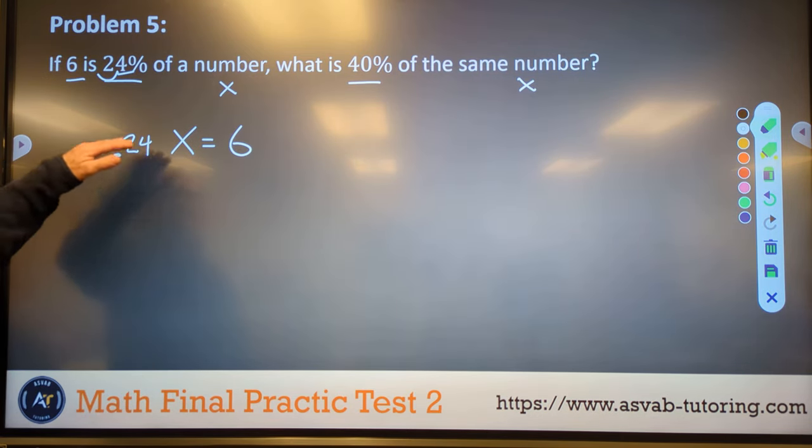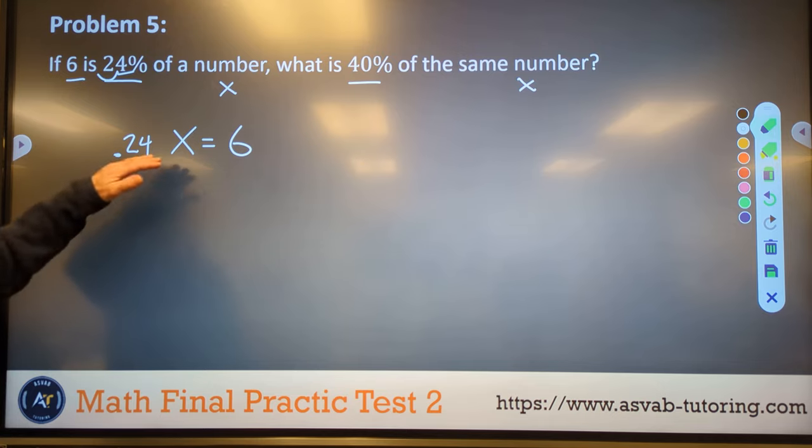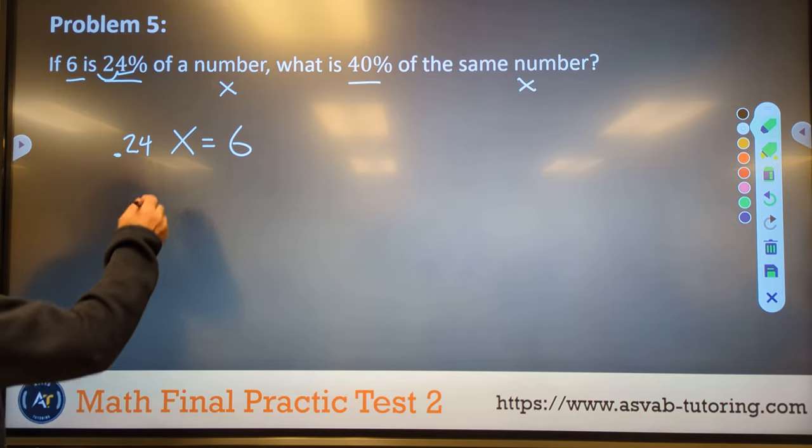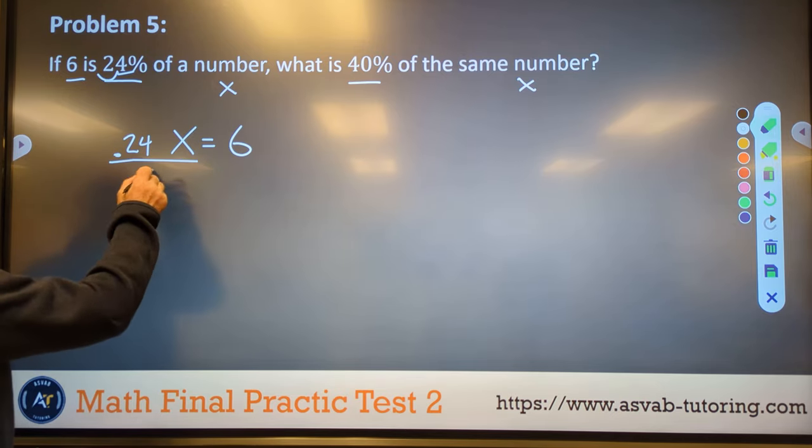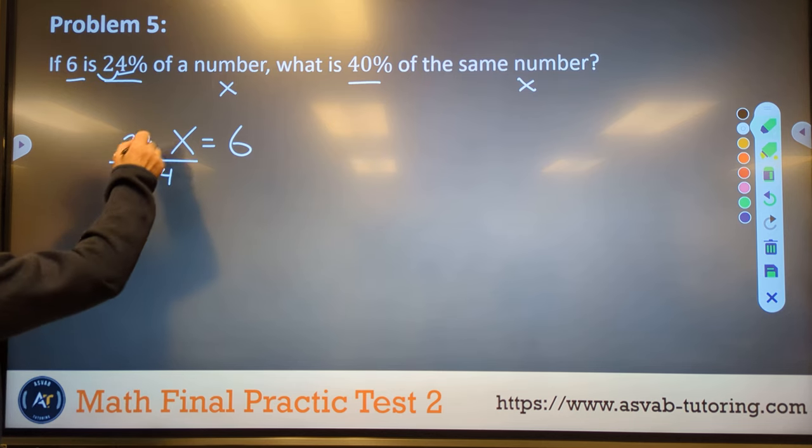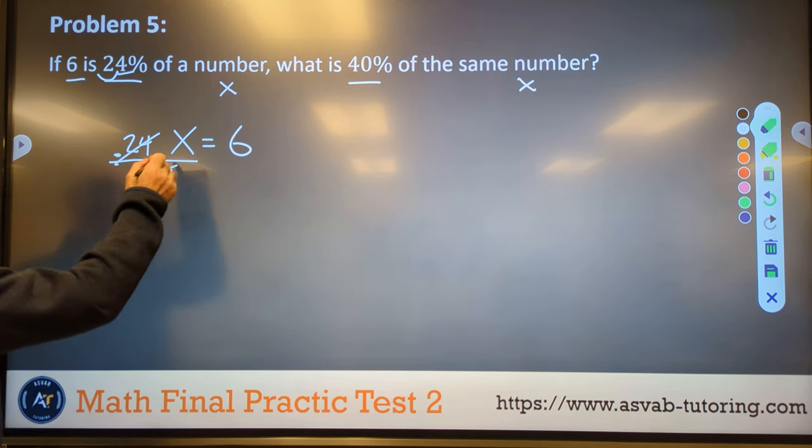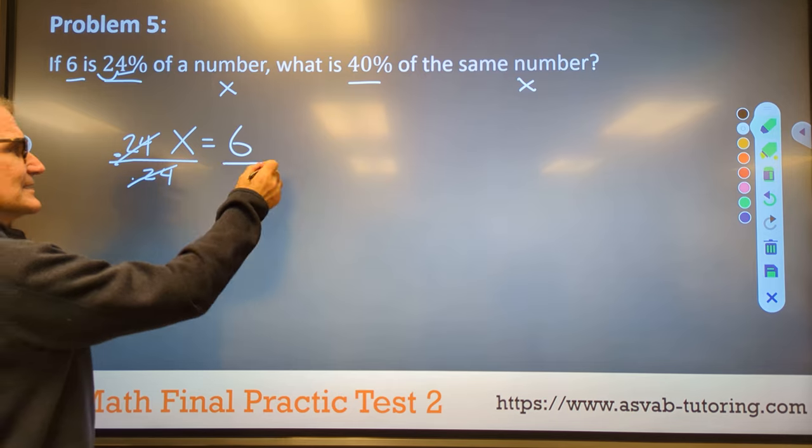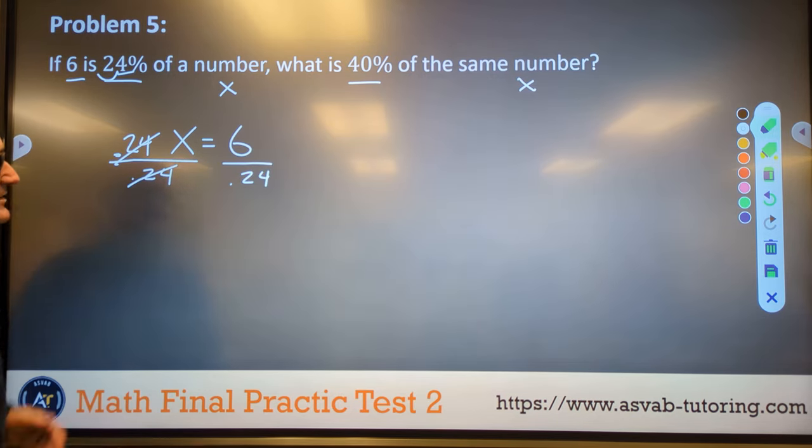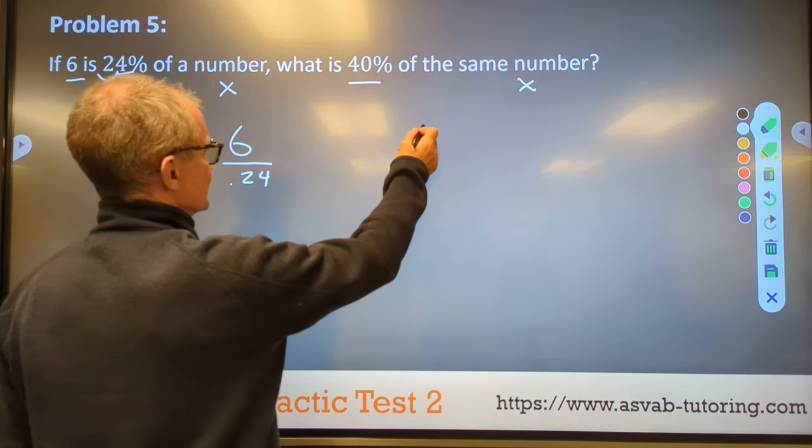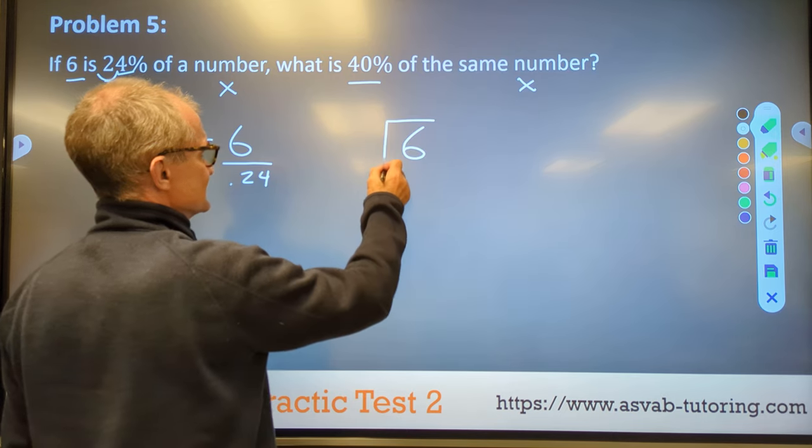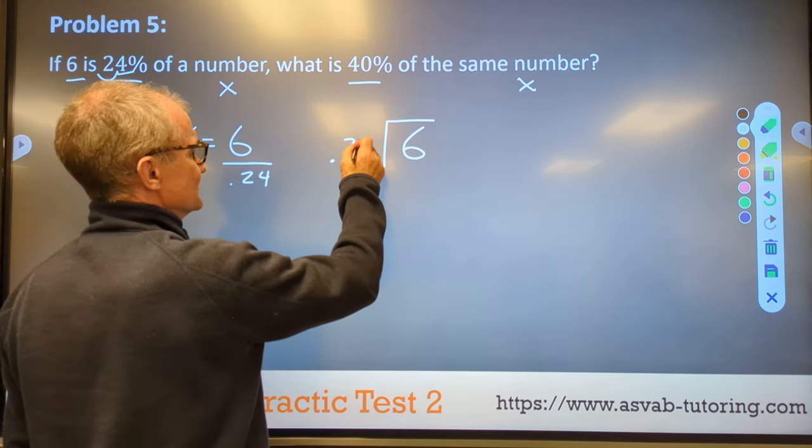So I got 0.24 times x equals six. I got to get that x, that unknown by itself. I divide both sides by 0.24. These are going to cancel. Now I have x by itself. If I do that to the left side, I have to do it to the right side. So I have six divided by 0.24.